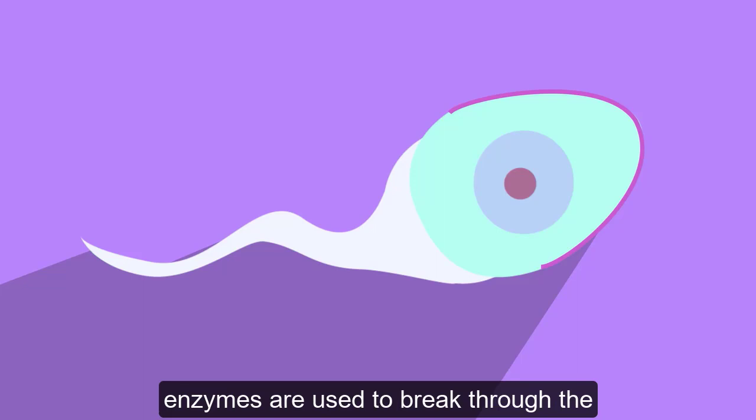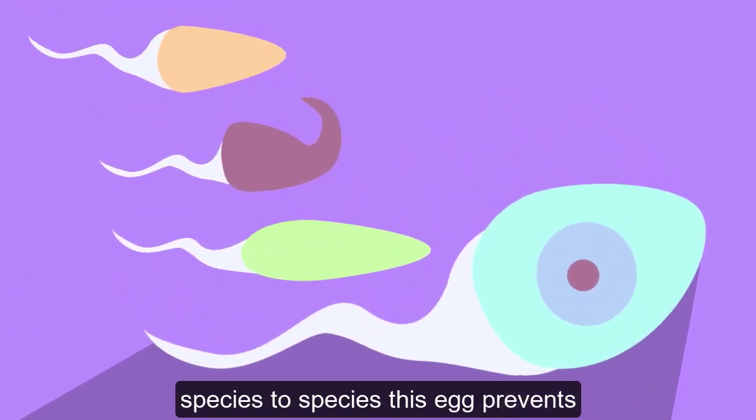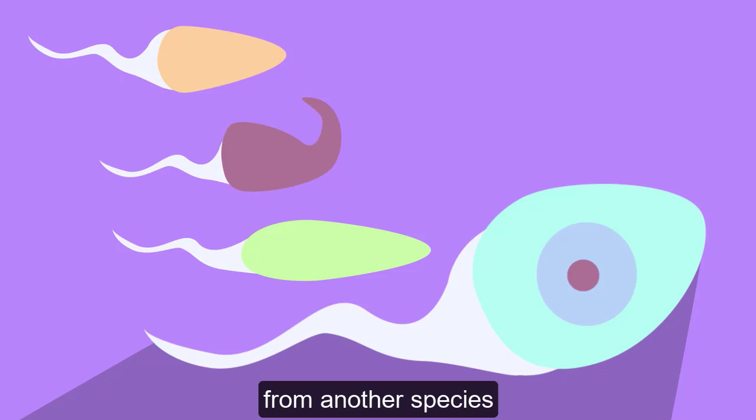These enzymes are used to break through the protein coating that is around each egg cell. Because this protein varies from species to species, this prevents egg cells from being fertilized by sperm from another species.